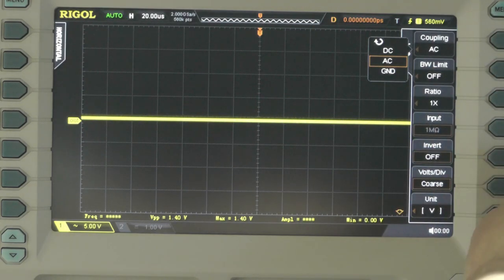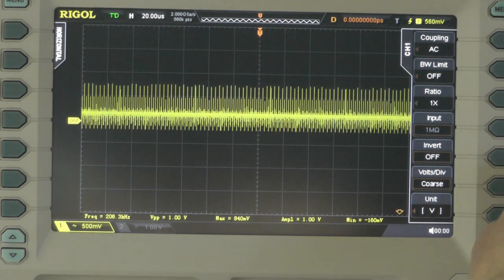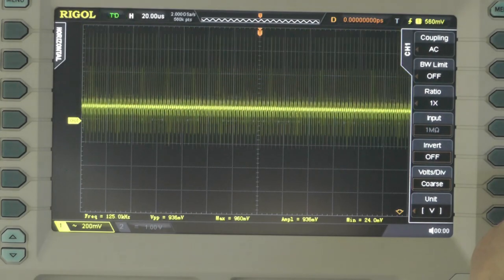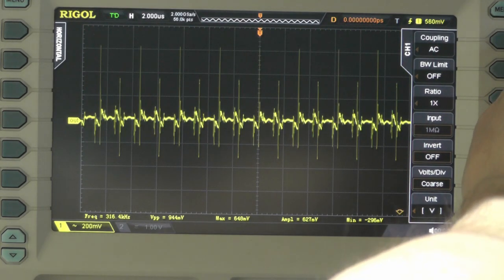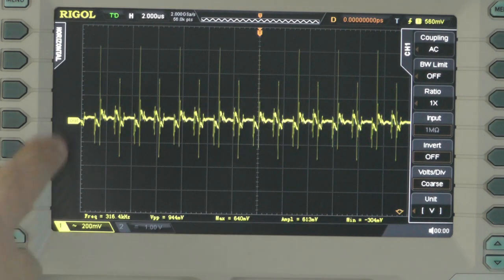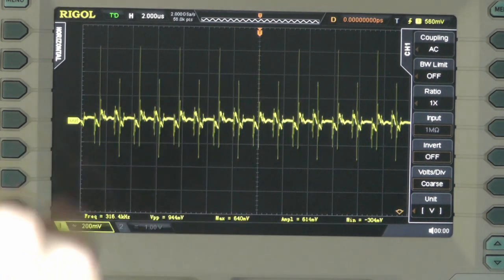You can see about 200 millivolts per division there. That's to be expected—that's high-frequency switching noise of the DC-to-DC converter.